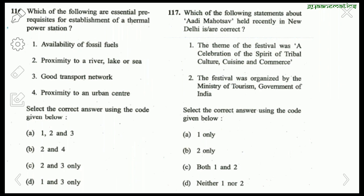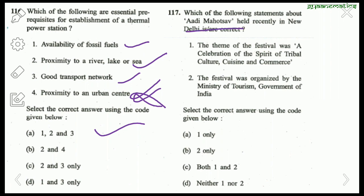Prerequisites for establishing a thermal power station: availability of fossil fuels — correct; proximity to a river, lake, or sea — correct; good transport network — correct; proximity to an urban center — wrong, because thermal plants produce a lot of smoke and pollution. So the right answer is 1, 2, and 3. Regarding Adi Mahotsav held recently in Delhi: the theme was 'A Celebration of the Spirit of Tribal Culture, Cuisine and Commerce' — correct.